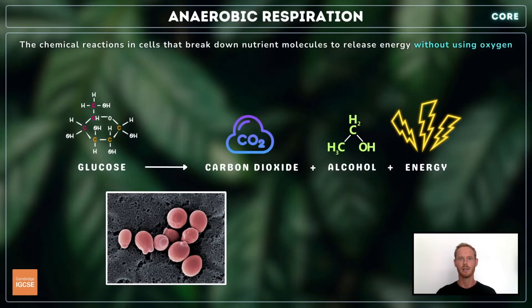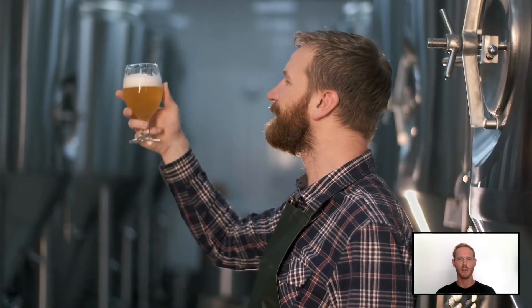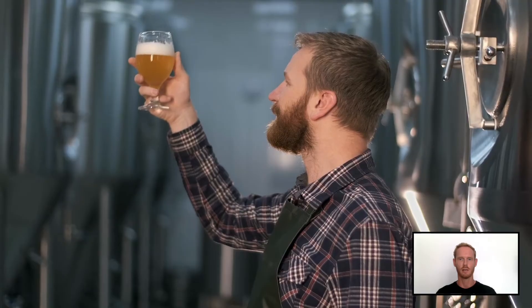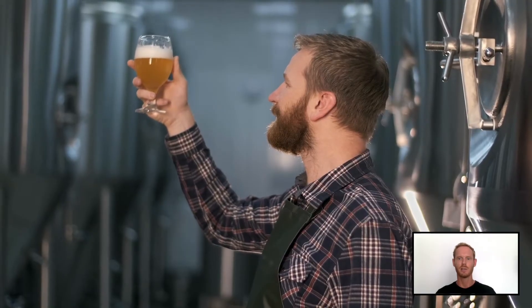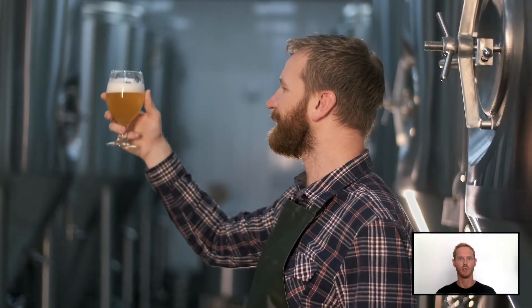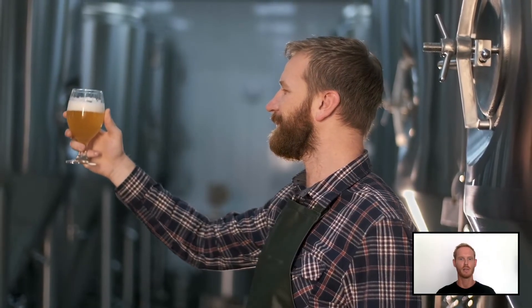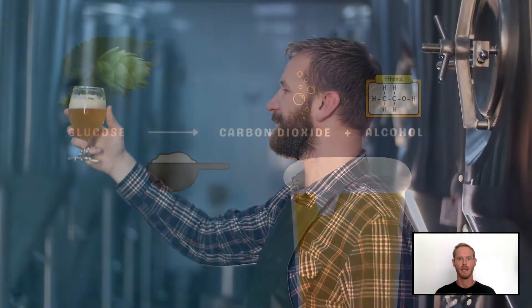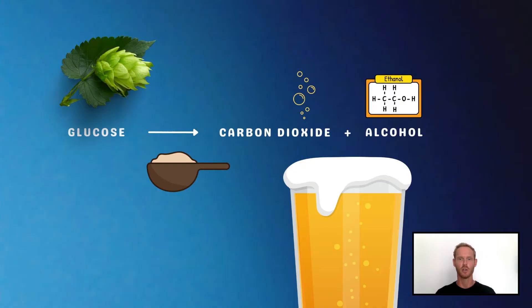In yeast, glucose is converted to carbon dioxide, alcohol and energy. In the production of beer and other alcoholic drinks, yeast is added to a sugary solution made from hops and grains. It converts some of the sugars to alcohol and also releases carbon dioxide, which is what makes the drinks fizzy.